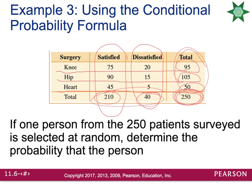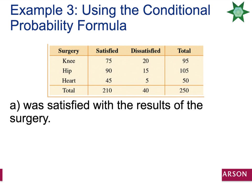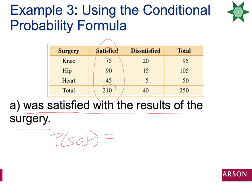If one person is selected at random from the 250 patients surveyed, determine the probability that the person was satisfied with the results of the surgery. Notice this is not a compound probability — they didn't say 'given something else.' They just want P(satisfied). Looking at the satisfied column, there was a total of 210 satisfied out of 250 patients. You can reduce that fraction: the probability is 21 out of 25.